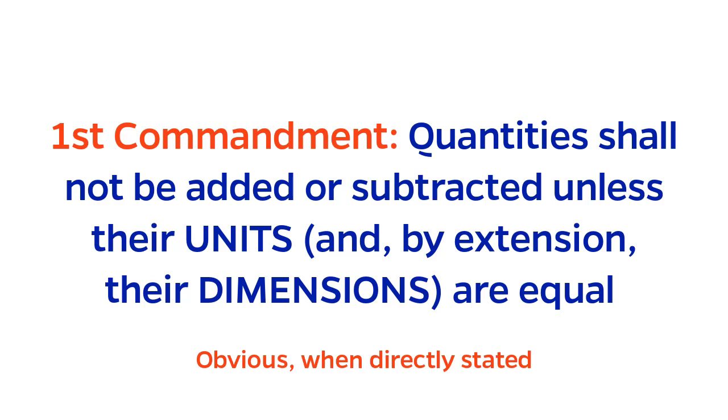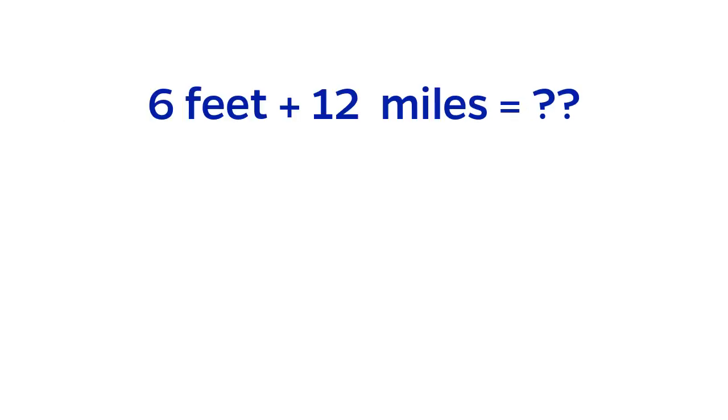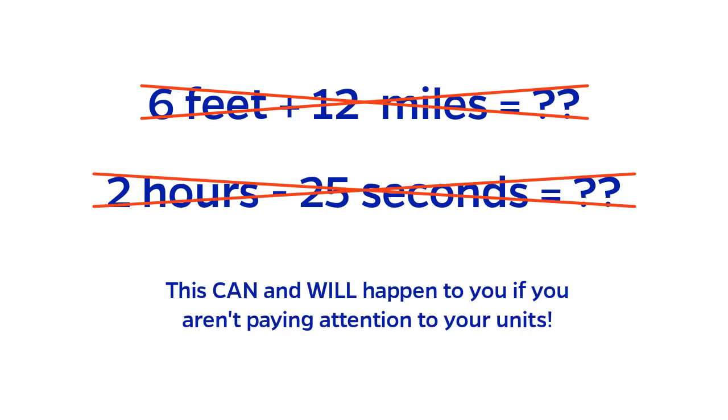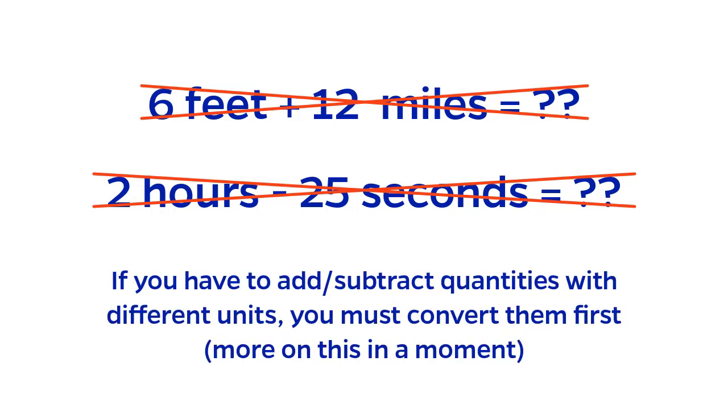This one might sound obvious when I directly state it. Of course, you can't add six feet to twelve miles, or subtract 25 seconds from two hours. But don't laugh. This is an easy mistake to make when you aren't focusing on it and keeping careful track of your units. If you do have to add or subtract quantities with different units, you must convert units so that they match. More on this in a moment.